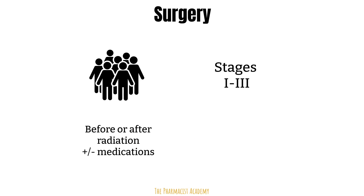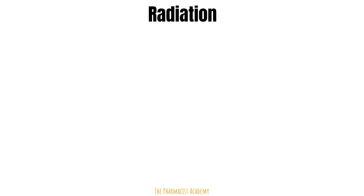You will hear the terms adjuvant and neoadjuvant a lot, usually referring to the medications a patient will receive in reference to surgery. In patients whose tumors are too big to go right into surgery, we usually give them chemo first to shrink the tumor, and then they proceed to surgery — in this case the chemo is known as neoadjuvant therapy. If medications are given after surgery, it's referred to as adjuvant therapy. Surgery improves overall survival, and patients have even better outcomes when combined with other treatment modalities like radiation, also known as radiotherapy. Even though long-term it may be a risk factor for cancer, it's also very effective in managing patients in the immediate term.